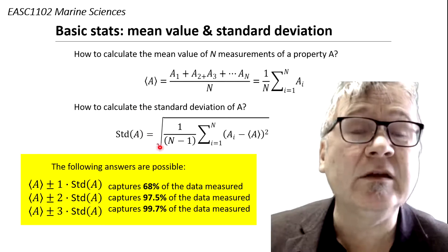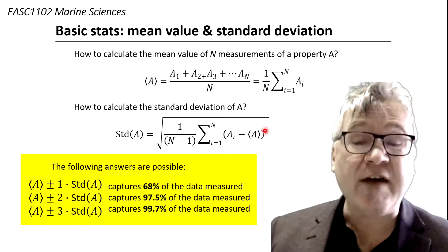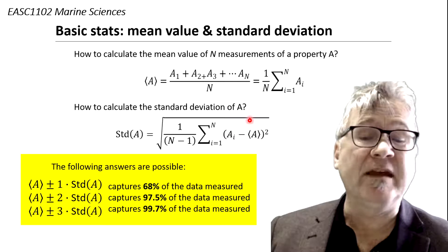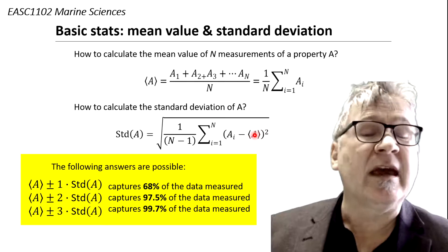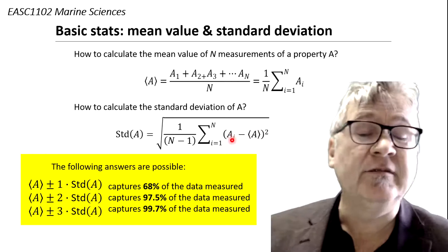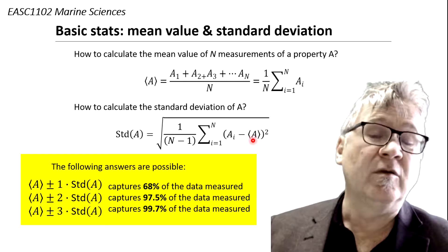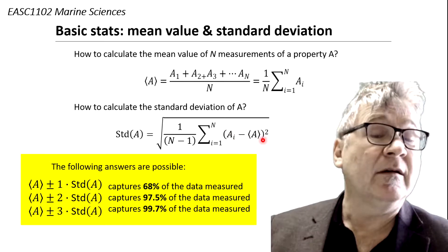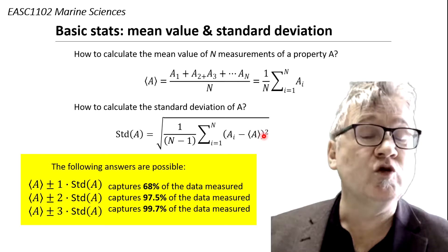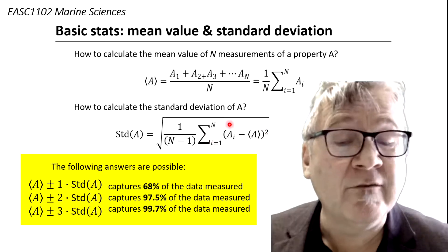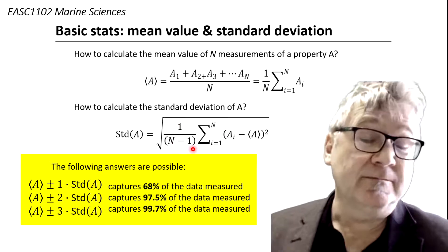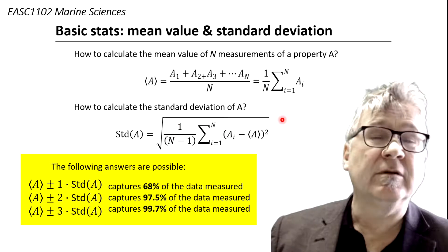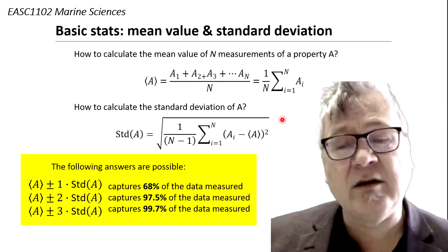It's also a formula. For this formula you need to know the average value, the mean value, which is here plugged into this formula. And you take the difference of each individual value with the mean value in brackets to the power of 2. And the sum of all measurements you divide by n minus 1, and then you take the square root. Sounds complicated, but I think you can work that out.